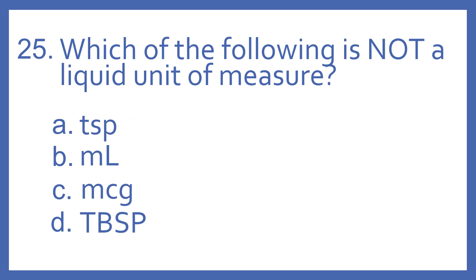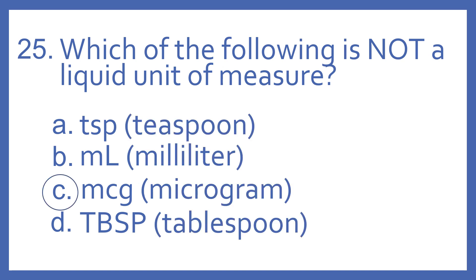Number 25, which of the following is not a liquid unit of measure? A, TSP, B, ML, C, MCG, or D, TBSP? And the answer is C, MCG. That stands for microgram. That is not a liquid unit of measure. That is a weight unit of measure. Often it's seen like with a dose of a medication. It may be in micrograms. TSP is teaspoon. ML is milliliter. And TBSP is tablespoon. And those are all liquid units of measure.